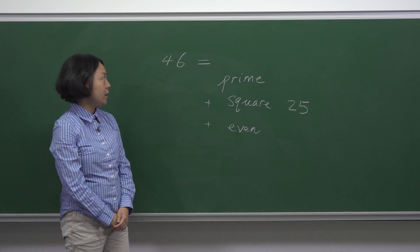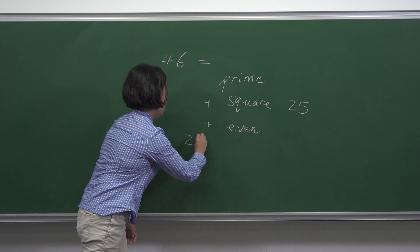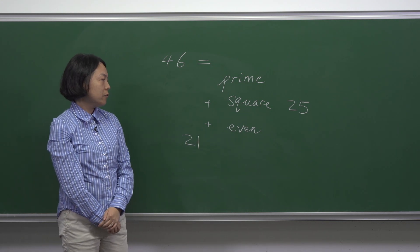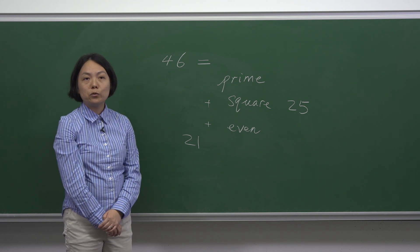Now we subtract 25 from 46. We are left with 21. So we're looking for an even number and a prime number adding up to 21.